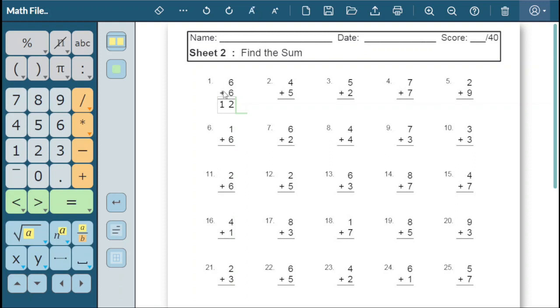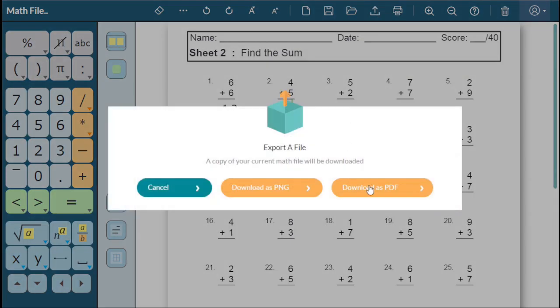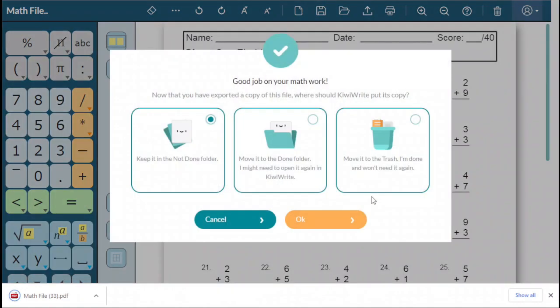KiwiWrite will automatically save your work once a minute to prevent mistakes, but click save file when you are done working to save all your work. KiwiWrite will display the last file you worked on when you log on, unless you move the file to the done folder by selecting that option after a print or export, or within the file open menu.